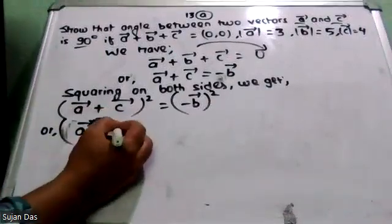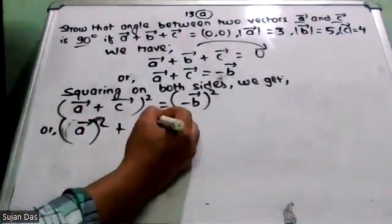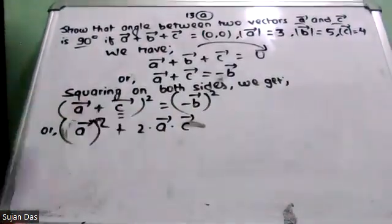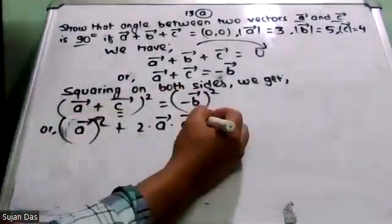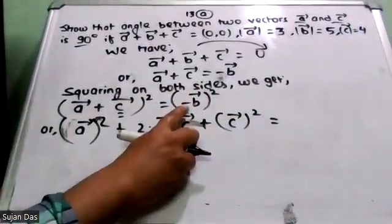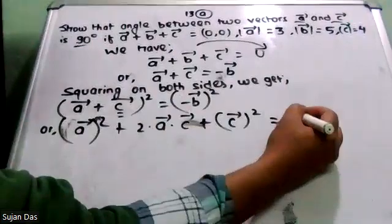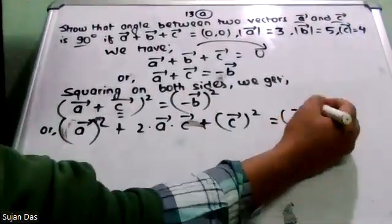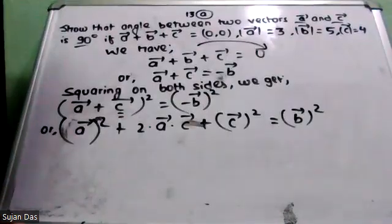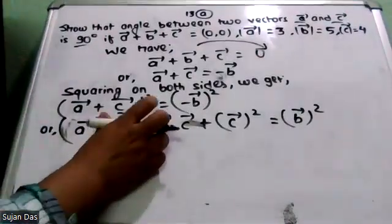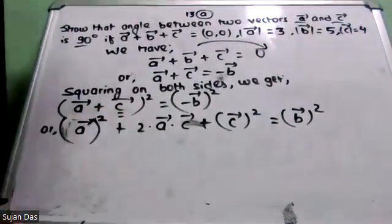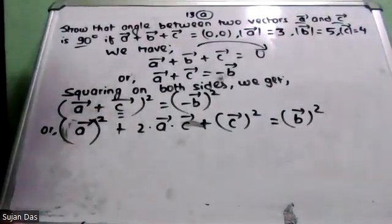So, expanding: |A|² + 2(vector A · vector C) + |C|² = |B|². The square of a vector's magnitude gives the magnitude squared. So magnitude of vector A squared plus 2 times vector A dot vector C plus magnitude of vector C squared equals magnitude of vector B squared.